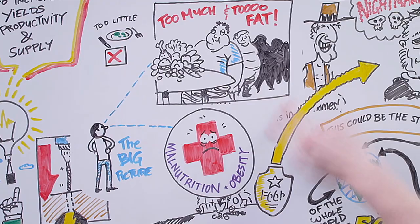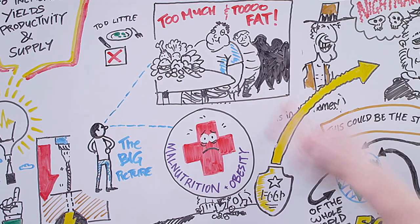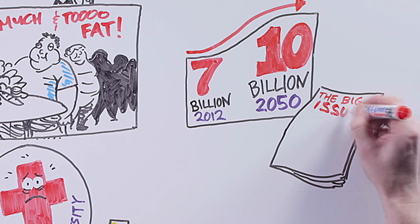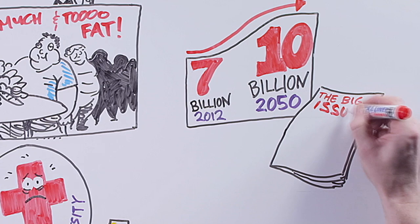So let's stand back and look at the big picture. The world's population is moving from 7 billion today to 10 billion in 2050. But this is not really the big issue. The big issue is consumption.